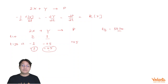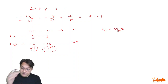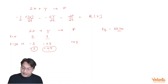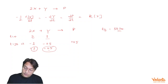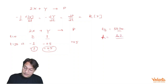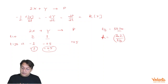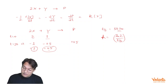Now, if t½ is 50 seconds, can we find the rate constant of the reaction? For a first order process, k = ln2 / t½ = 0.693 / 50 seconds. But here is a catch.